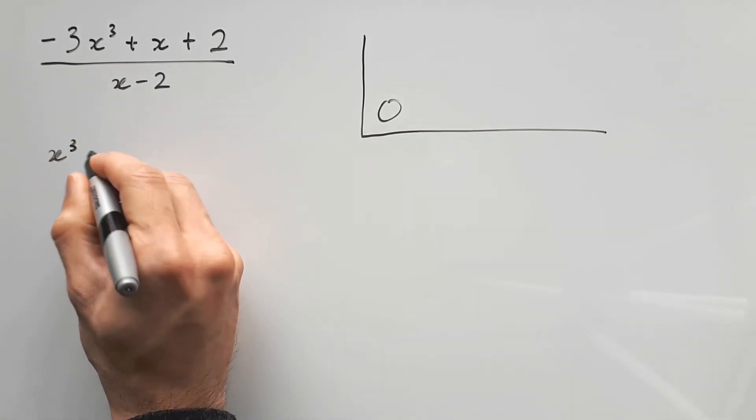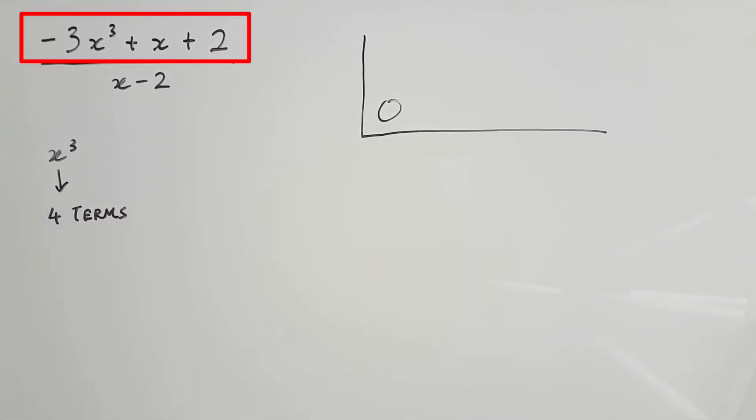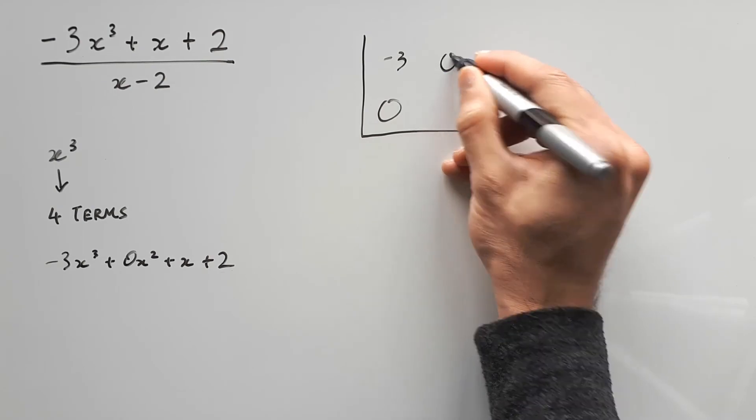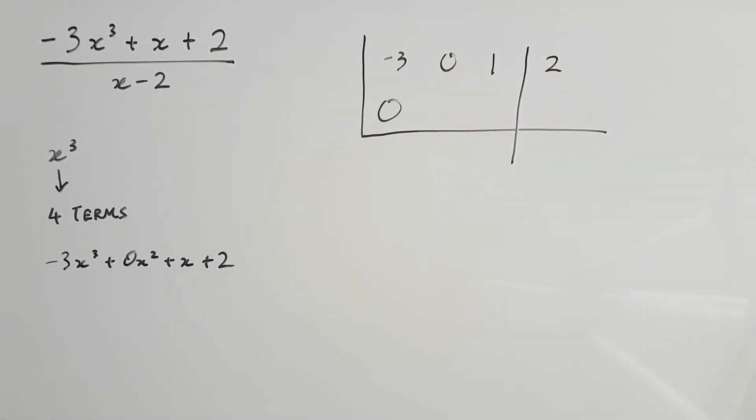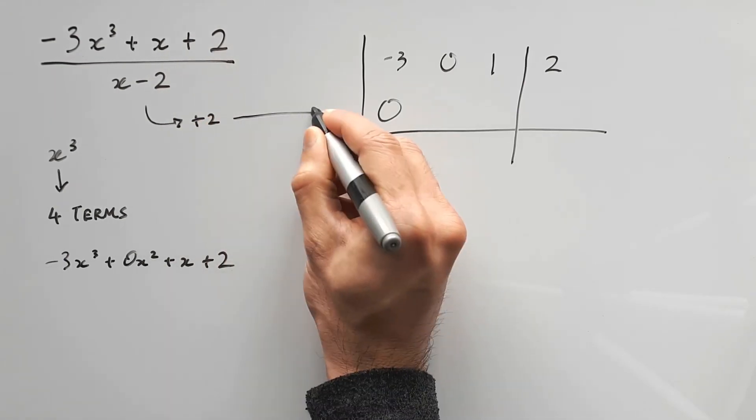But be careful with this step. A cubic is supposed to have 4 terms, but we only see 3 here. That's because the x squared term is missing. This is what the polynomial is supposed to look like. And that's what we need to write in the division bracket. So, isolate the last number and now take the opposite of our divisor's number as positive 2. Place this outside.